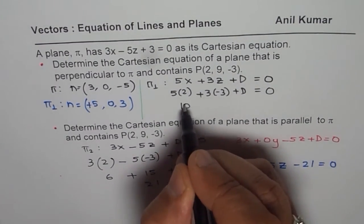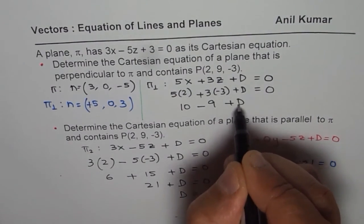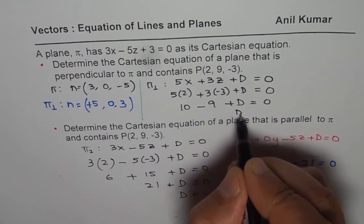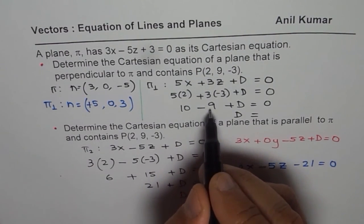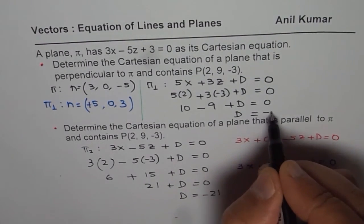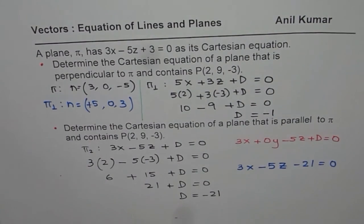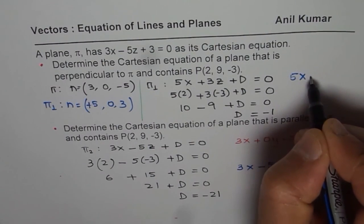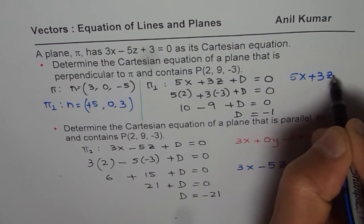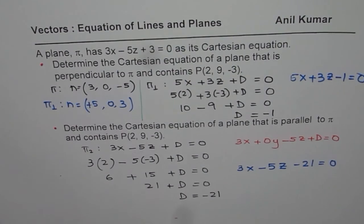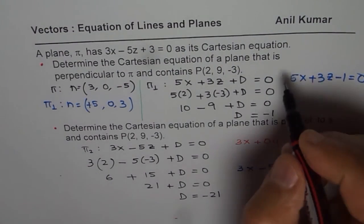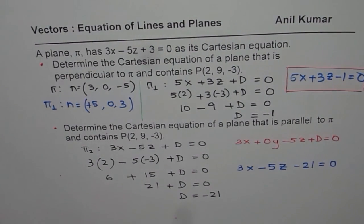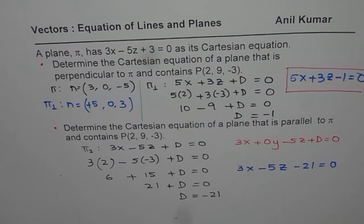So that is 10 minus 9 plus d equals to 0. And that gives us d as equal to 10 minus 9 is 1. When you take it on the other side, it is minus 1. So we get our equation which could be written as 5x plus 3z minus 1 equals to 0. So that is the solution for the given equation. I hope you understand and appreciate the steps. Thank you and all the best.